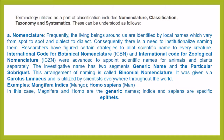Nomenclature. Frequently, the living beings around us are identified by local names which vary from spot to spot, from region to region and from dialect to dialect. Consequently, there is a need to standardize naming them. Researchers have figured out certain strategies to allot scientific names to every creature, which is known as the International Code for Botanical Nomenclature (ICBN) and International Code for Zoological Nomenclature, advanced to appoint scientific names for plants and animals separately.